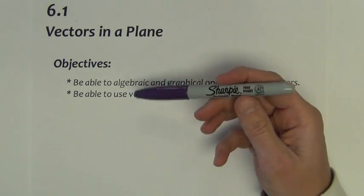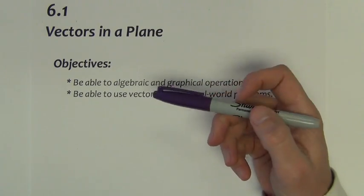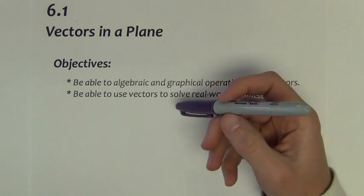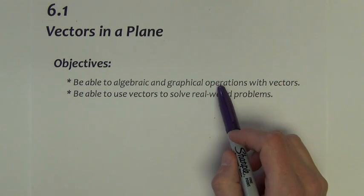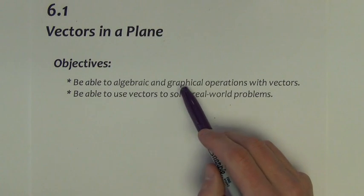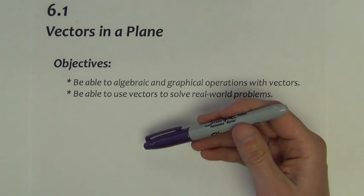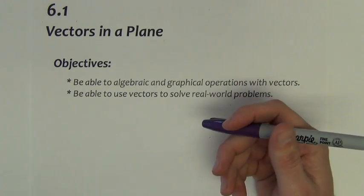Chapter 6 begins with a couple of sections on studying vectors. If you've taken physics before, some of this might be a little bit of review. We're going to spend this first section going over some operations with vectors, both algebraic and graphical operations. Then we're going to use vectors to solve some real-world type application problems.